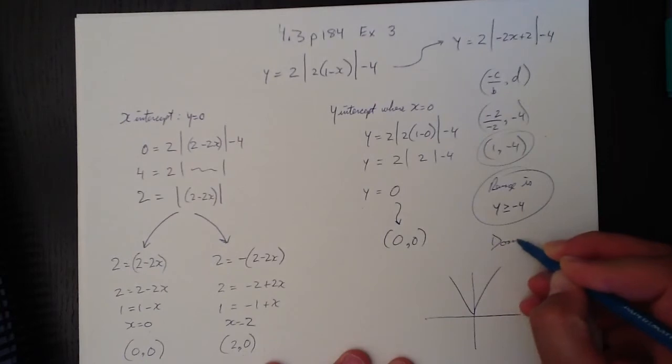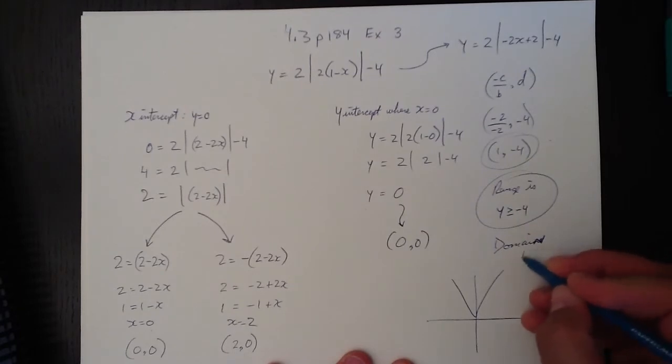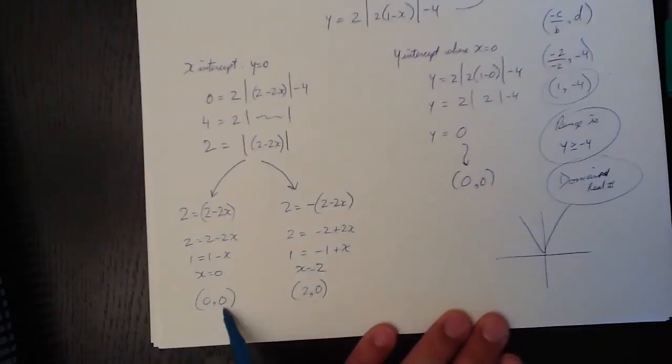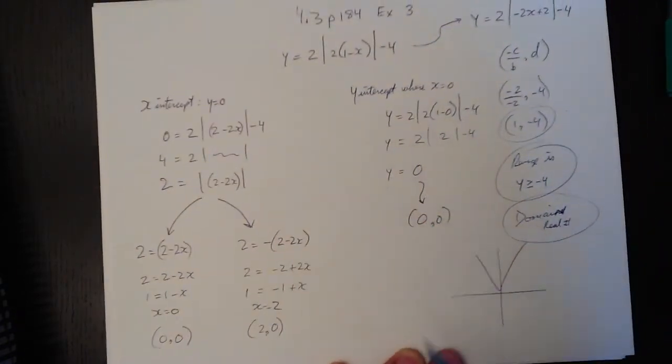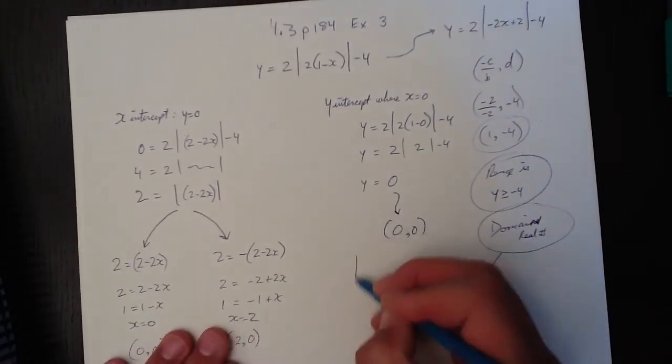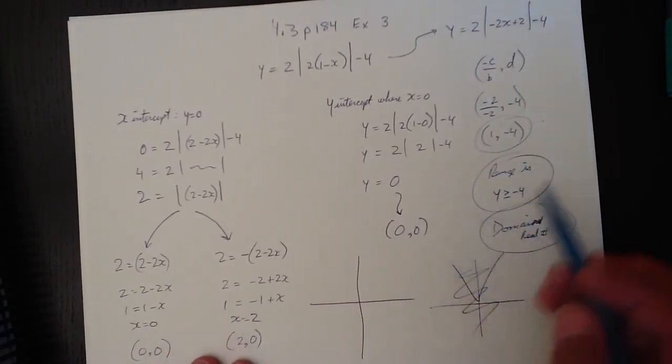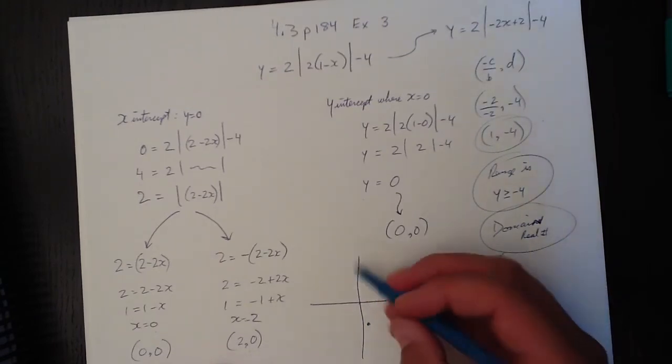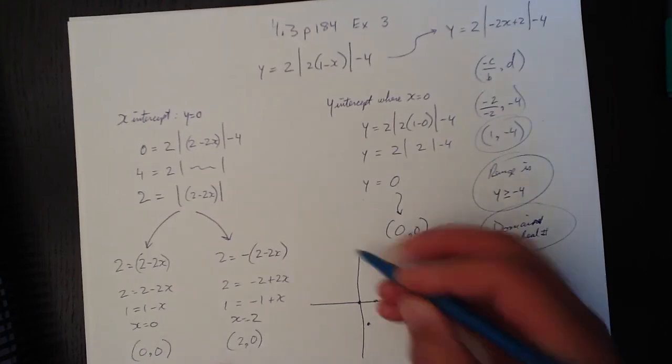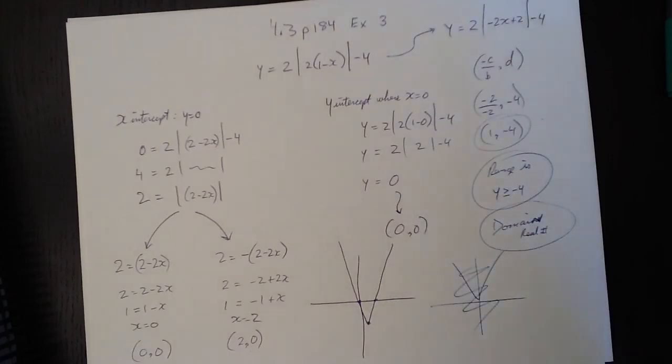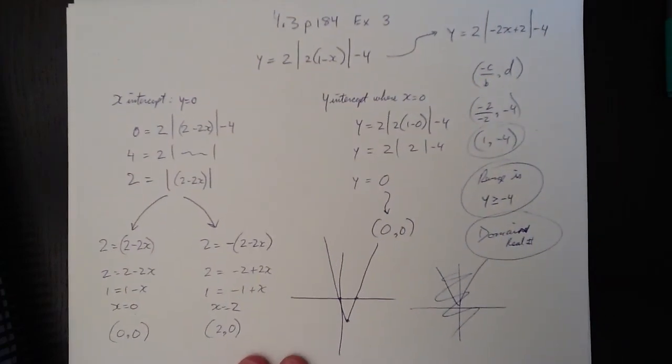So range, domain, I keep wanting to put the e there, domain is real numbers. So domain, range, intercepts, those are our two x-intercepts, our one y-intercept is there. And of course they want you to graph it. And that graph's not very good, so I'll do a better graph over here. The real graph is going to have a vertex of 1, negative 4, 1, 2, 3, 4, put it down there. And the y-intercept is 1 at 0, 0, and 1 at 2, 0. And it's going to look like that. And we could do that as a piecewise function, but I don't have all day.